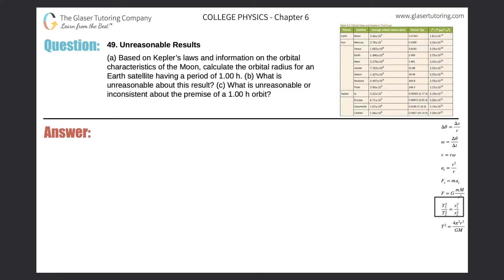Number 49, unreasonable results. Based on Kepler's laws and information on the orbital characteristics of the moon, calculate the orbital radius for an Earth satellite having a period of one hour.